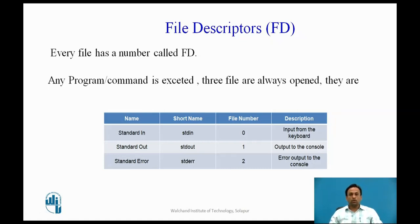In Linux or Unix, everything is a file — that is the regular files, directories, or even devices are files. Every file has an associated number called a file descriptor. Your screen also has a file descriptor. When a program is executed, the output is sent to the file descriptor of the screen and you see the program output on the monitor. If the output is sent to the file descriptor of the printer, the program output would have been printed.